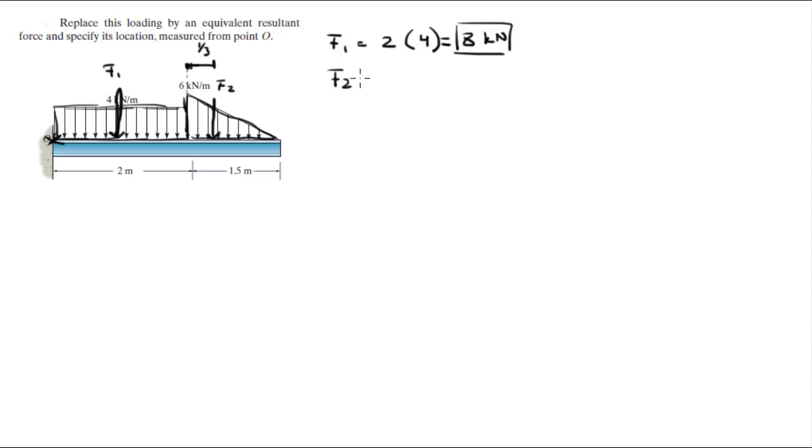F2, you gotta find the area of the triangle, which has a height of 6 times a length of 1.5 divided by 2, divided by 2 because it's a triangle, which will make the triangular loading have a magnitude of 4.5 kilonewtons.